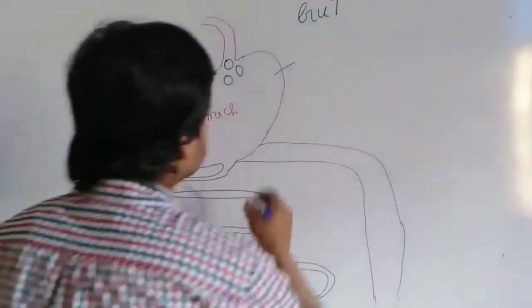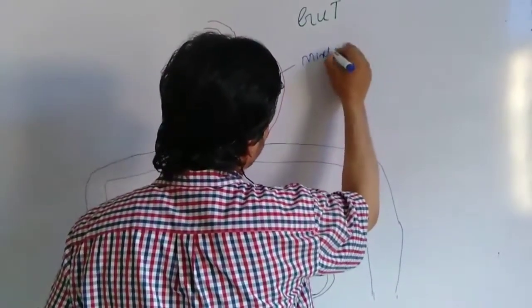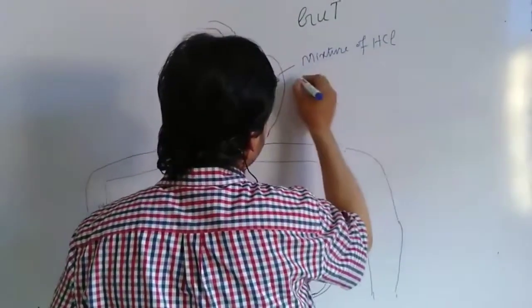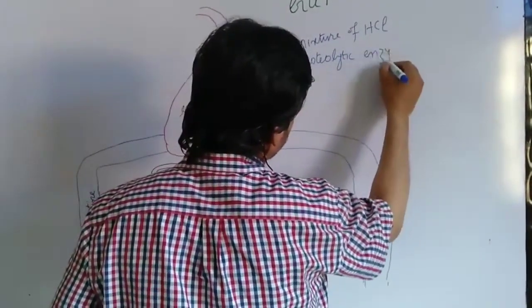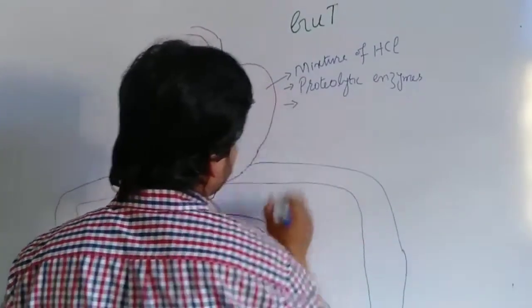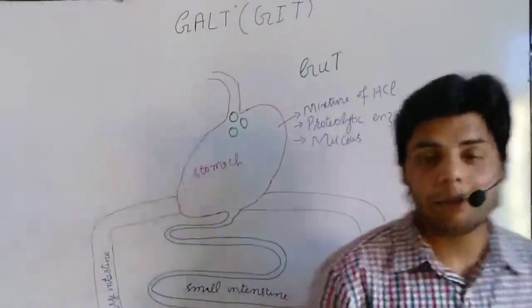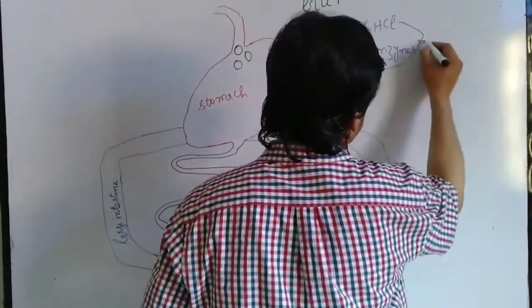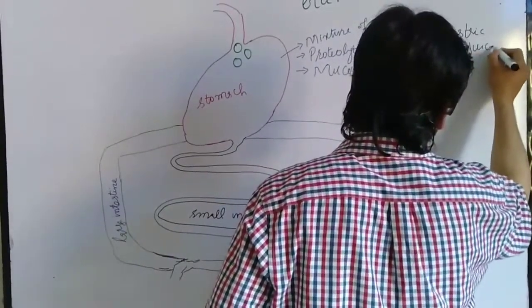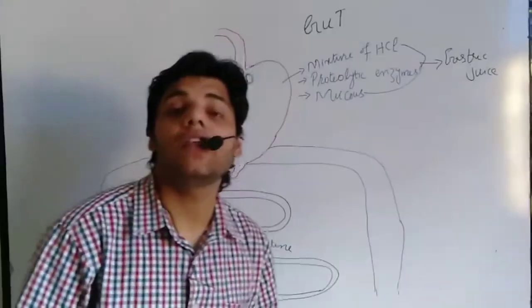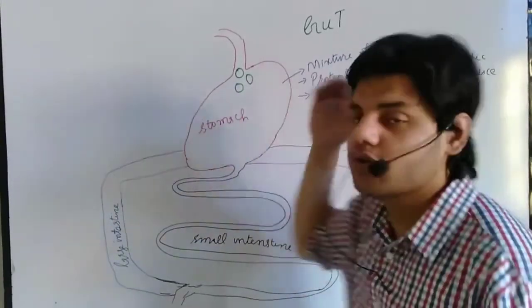The stomach usually contains a mixture of HCl (hydrochloric acid), proteolytic enzymes, and mucus. All three together make the gastric juice. This gastric juice has the ability to kill microorganisms, so when the microorganisms reach that specific area, the gastric juice can kill them.